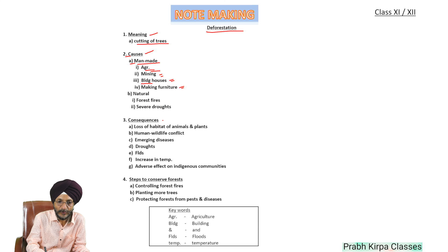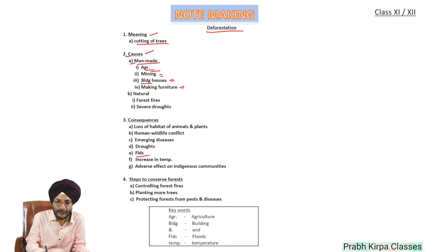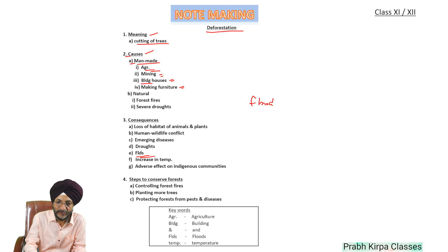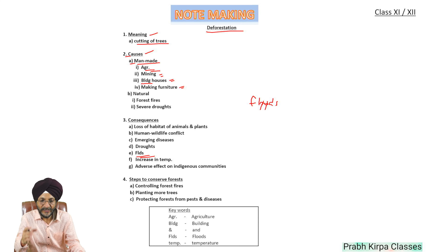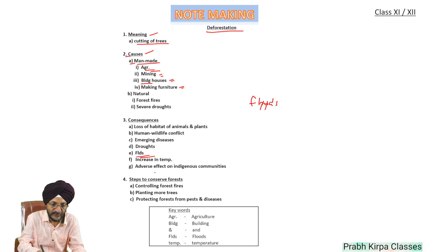These are the consequences of deforestation: loss of habitat of animals and plants, human-wildlife conflict, emerging diseases, and droughts. For 'floods' we have used an abbreviation — we removed the vowels O, so as already told we can remove vowels. So we have used the abbreviation FLDS.